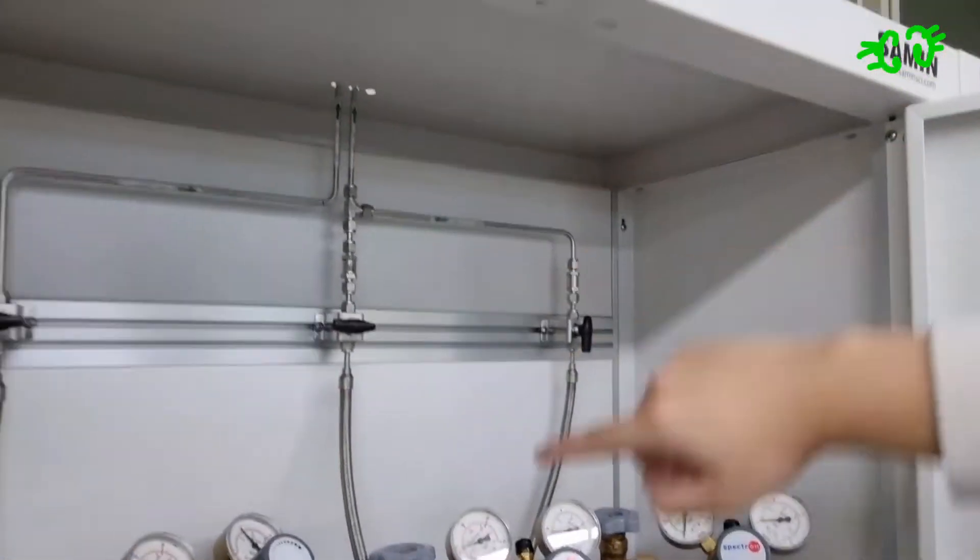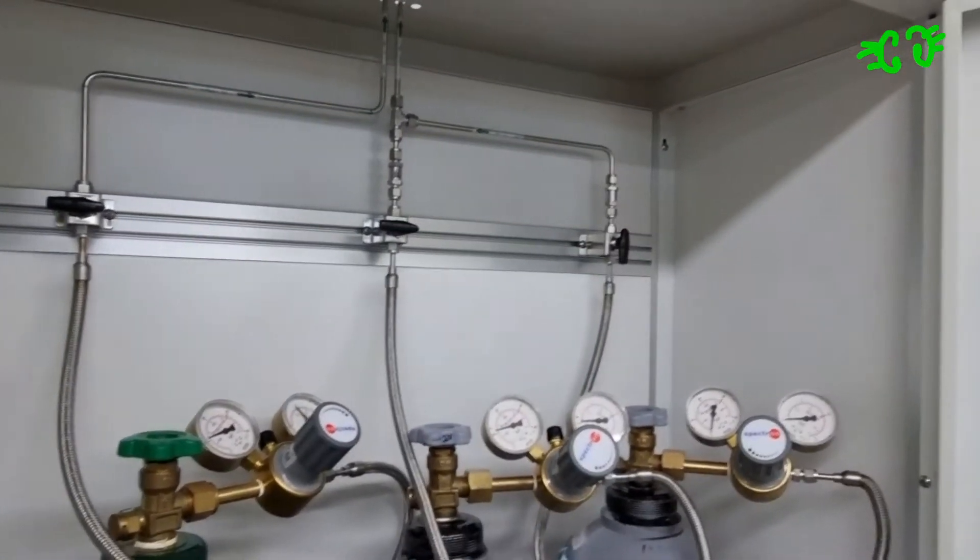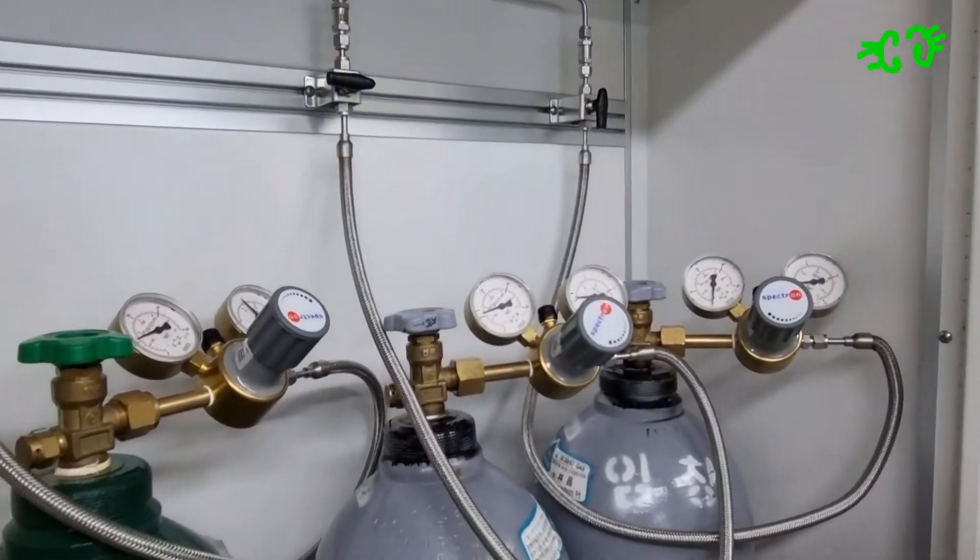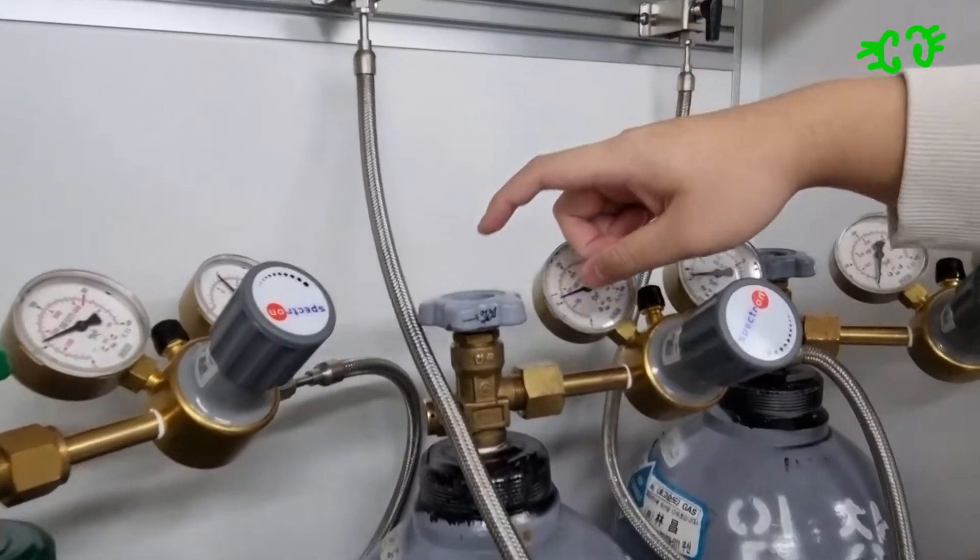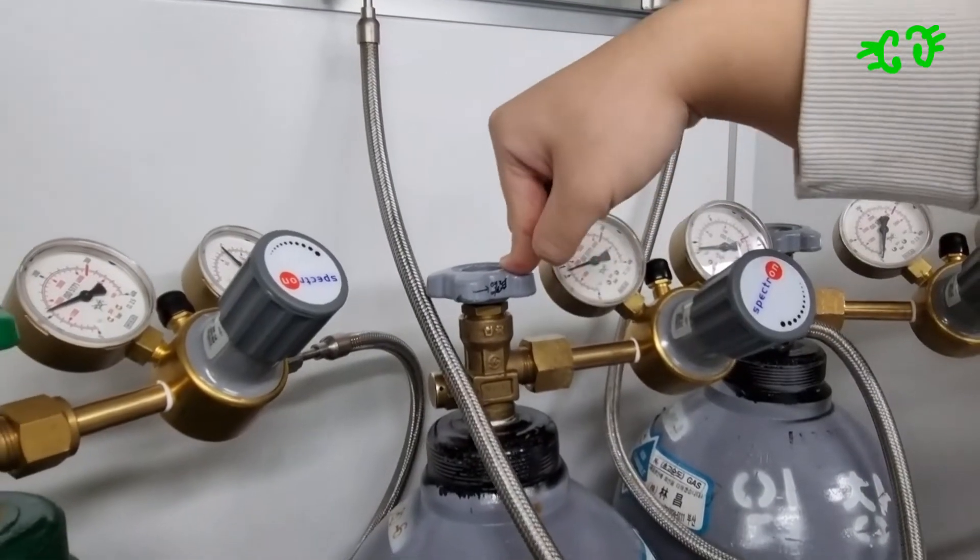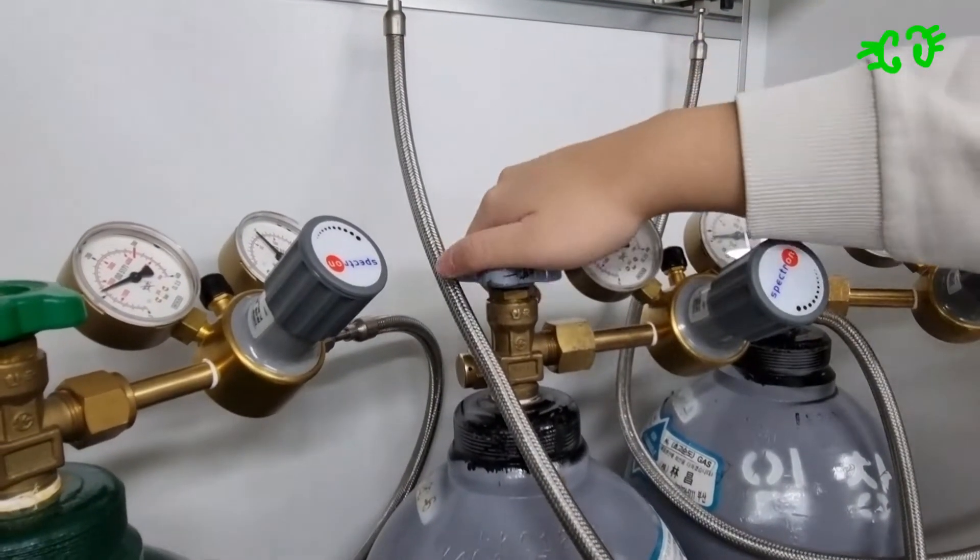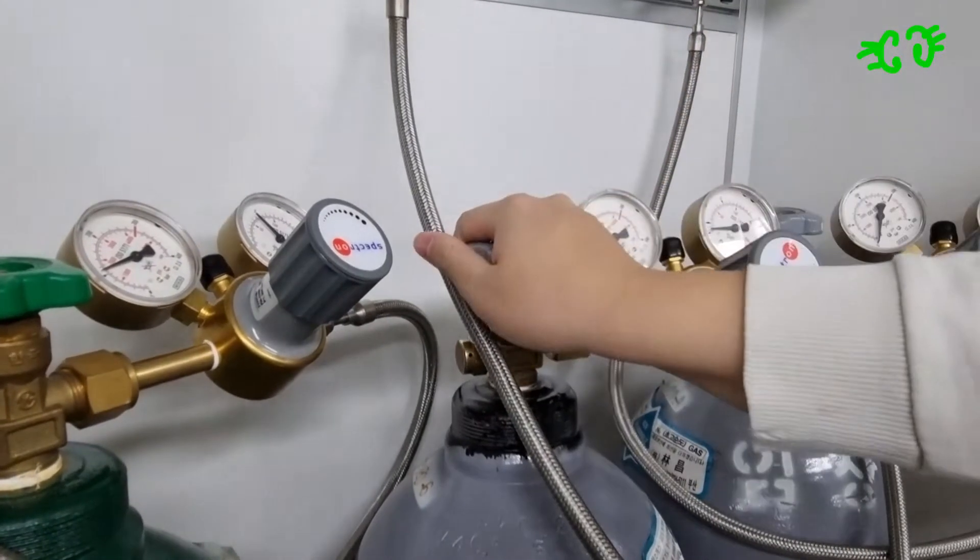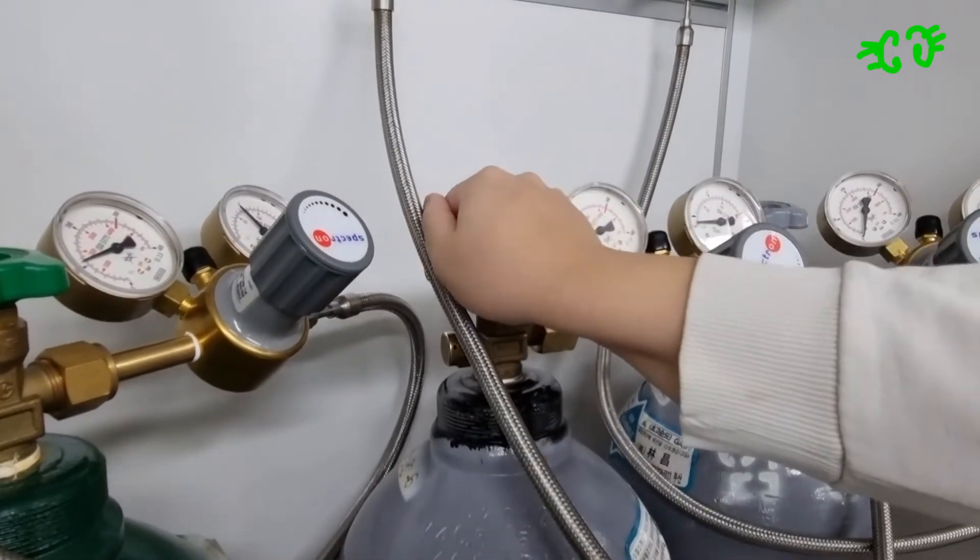You can see the tubes from here going up and connecting to that machine over there. So what we have to start with is opening the container. We twist it counter-clockwise to this side to open it. It's open.